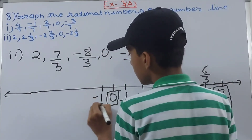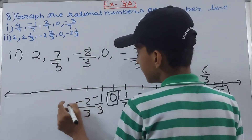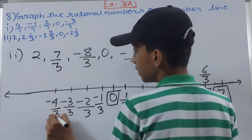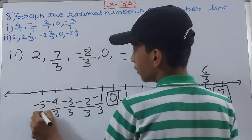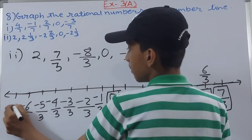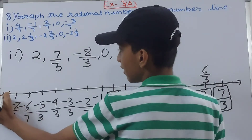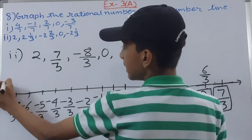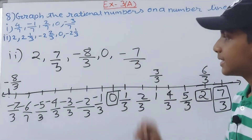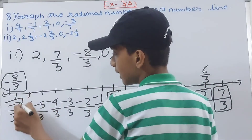On the negative side we mark: minus 1 upon 3, minus 2 upon 3, minus 3 upon 3, minus 4 upon 3, minus 5 upon 3, minus 6 upon 3, minus 7 upon 3, and minus 8 upon 3. Minus 8 upon 3 is graphed here, and minus 7 upon 3 is this last one. Like this you can graph rational numbers on the number line.